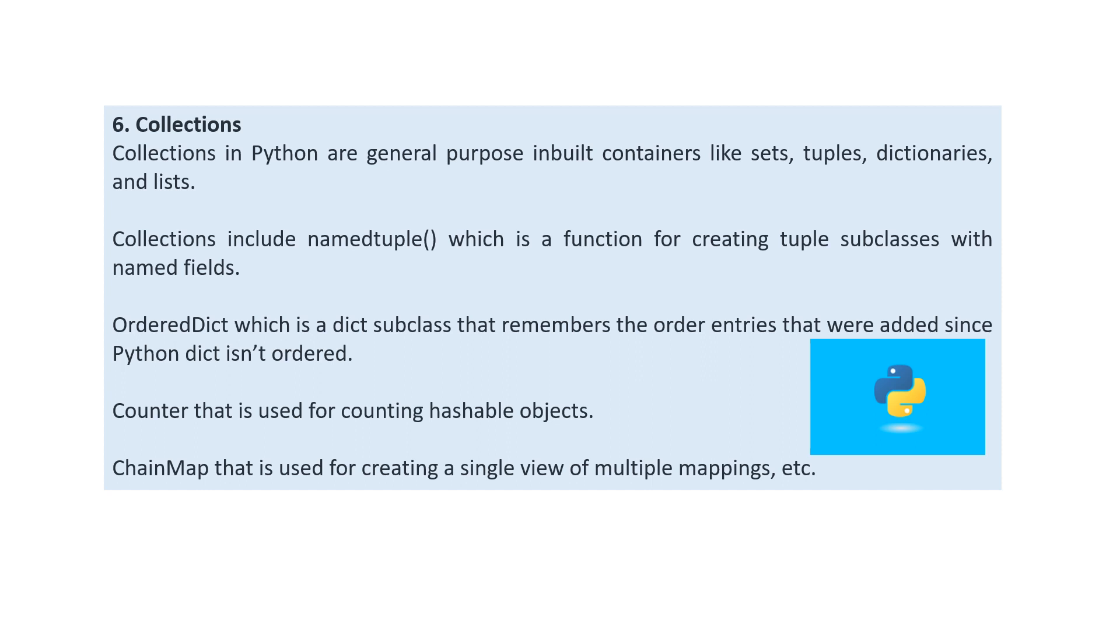The next concept is collections. Collections in Python are general purpose inbuilt containers like sets, tuples, dictionaries and lists. Collections include a namedtuple function which is used for creating tuple subclasses with named fields. If you want to know the difference between tuple and list, you can check my video on must know interview questions in Python. OrderedDict is a dictionary subclass that remembers the order entries were added since Python dictionary is not ordered. If you want data in order, you can use this OrderedDict attribute. Counter is used for counting hashable objects. Objects that have a specific value are known as hashable objects. ChainMap is used for creating a single view of multiple mappings.